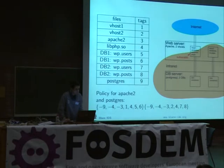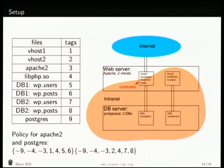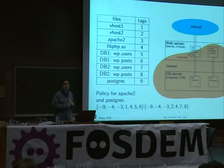I'll show a small demonstration of what we can do with Blair in a distributed system. We have one web server with two virtual hosts and one database server. One of the two virtual hosts is vulnerable and also accessible to the outside internet. We tag each file in the virtual host with a different tag: tag one for virtual host one, tag two for virtual host two. We also tag the Apache 2 executable and PHP shared library. We're using WordPress, so we have a database for users and posts for each website. Since we're using PostgreSQL, we can identify which file belongs to which database table.